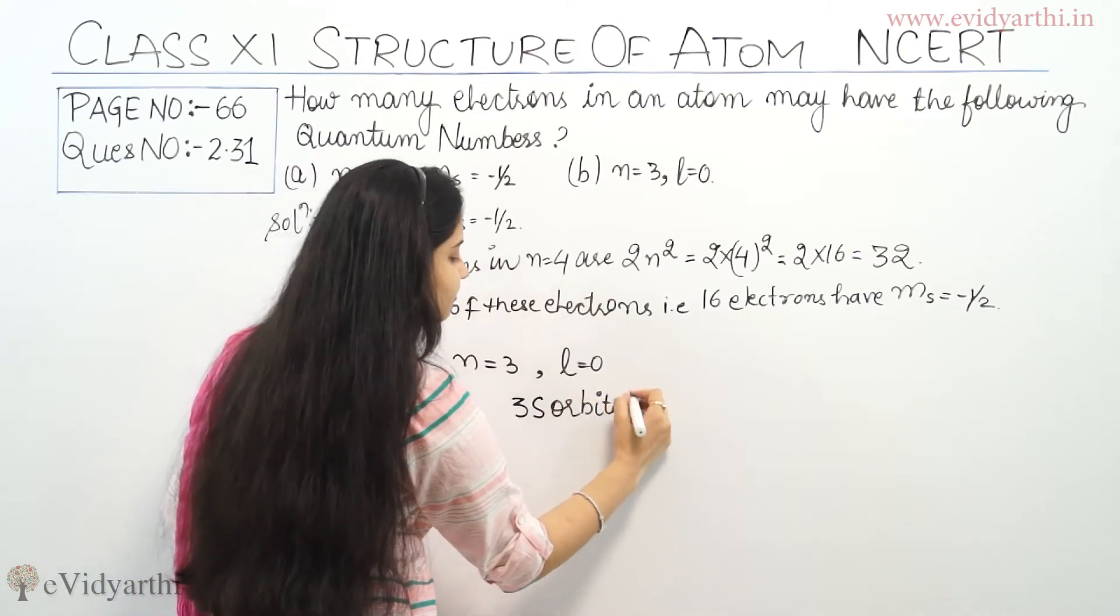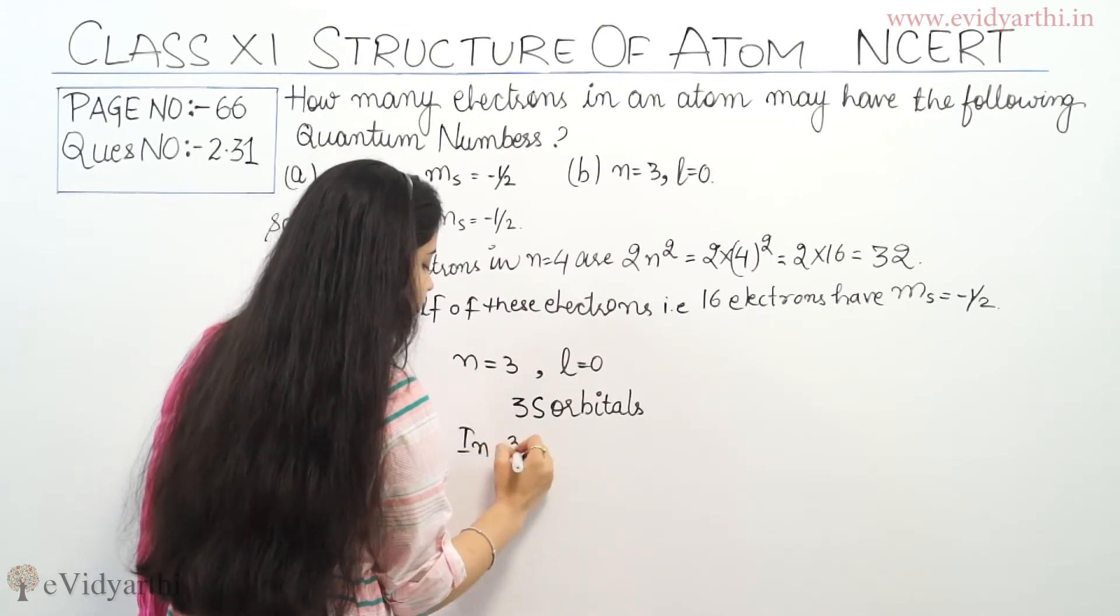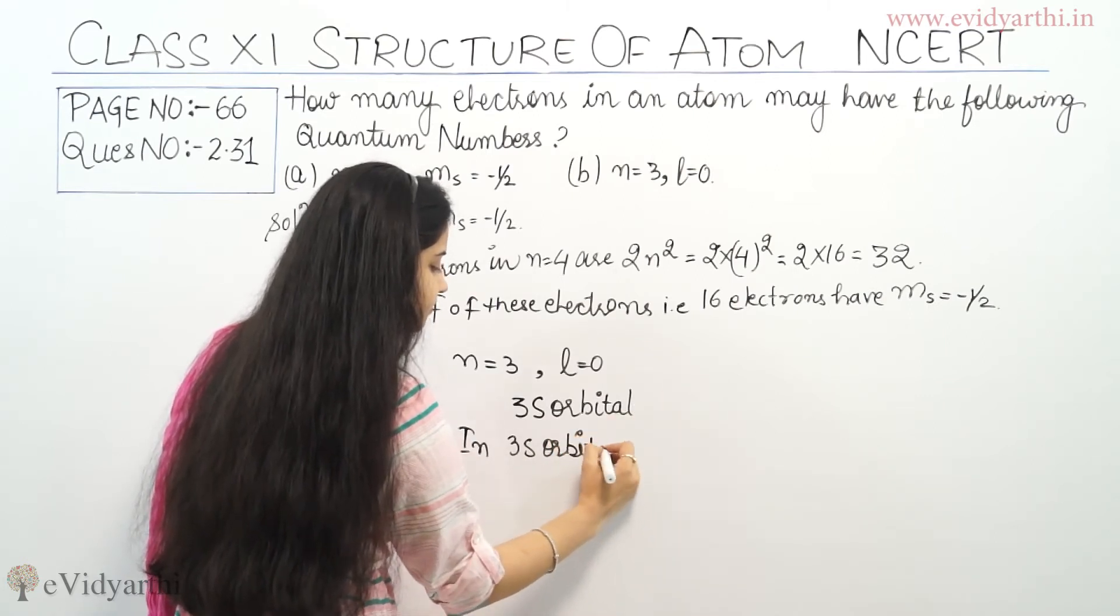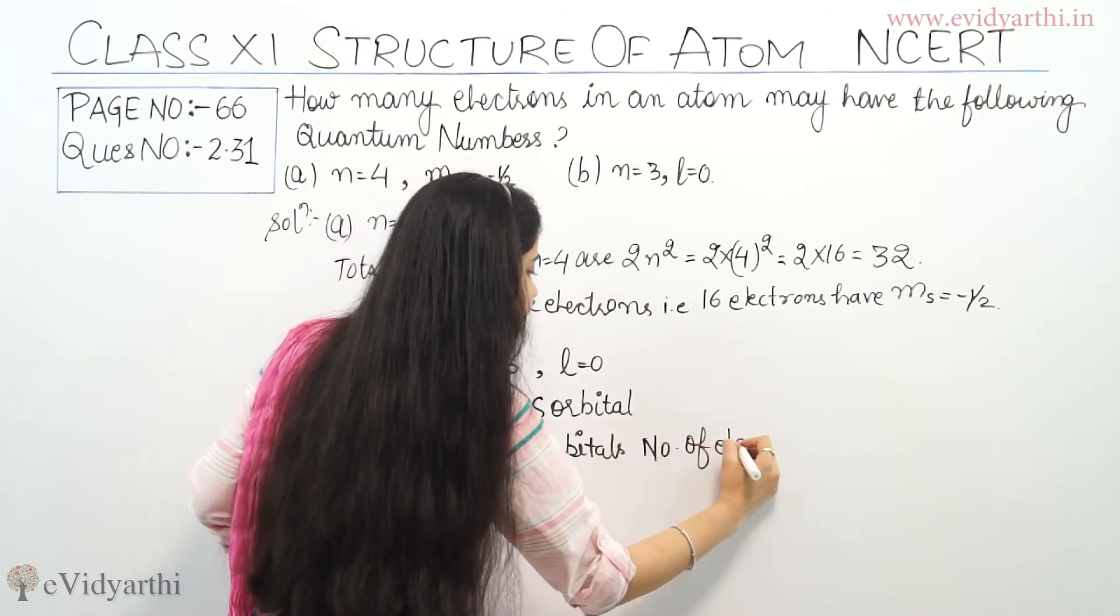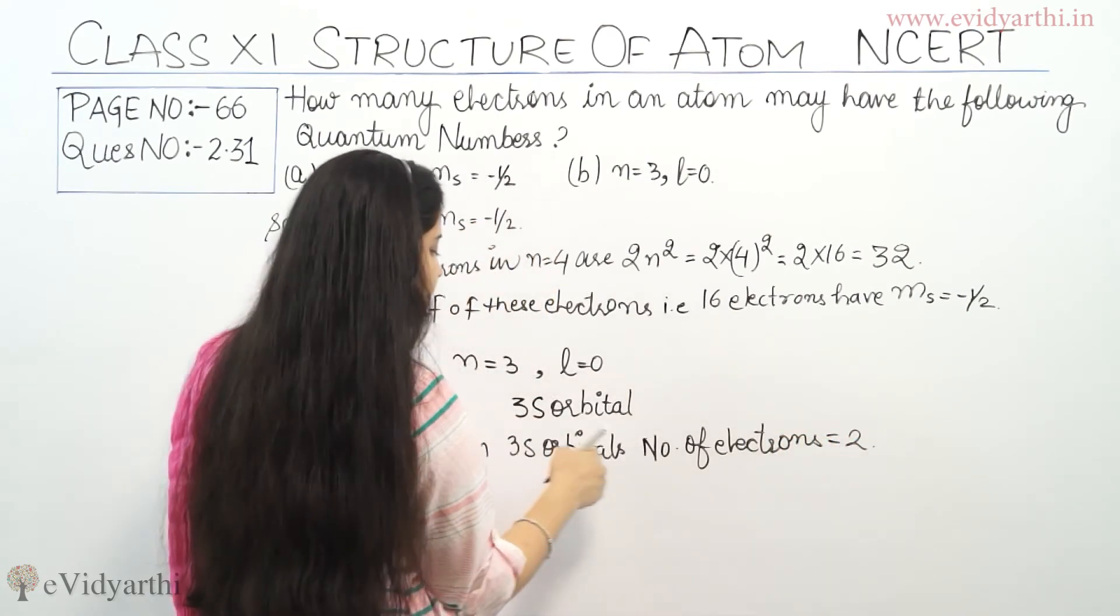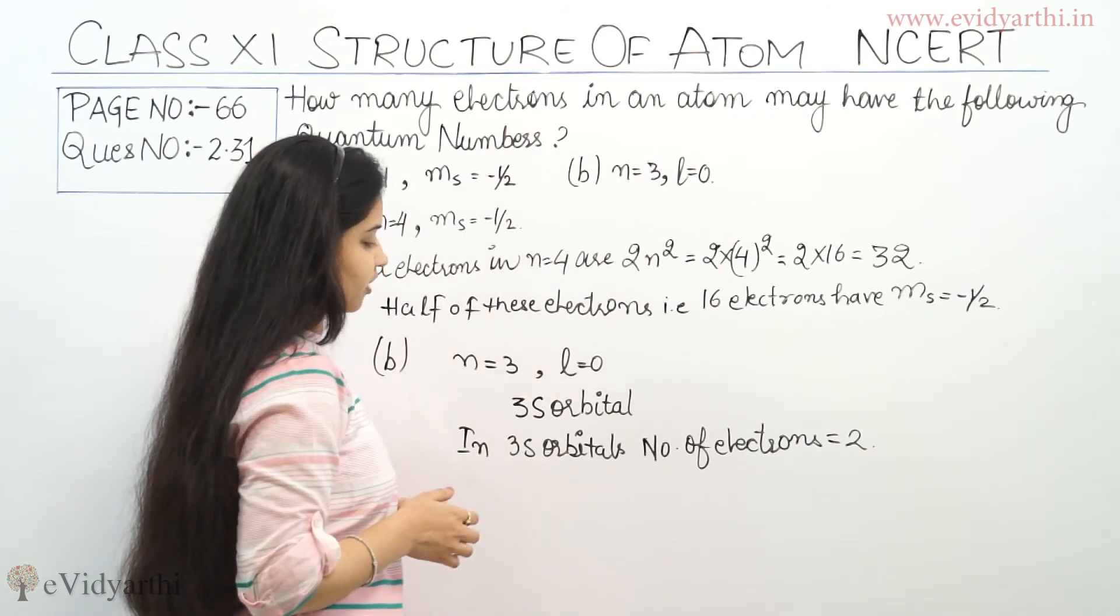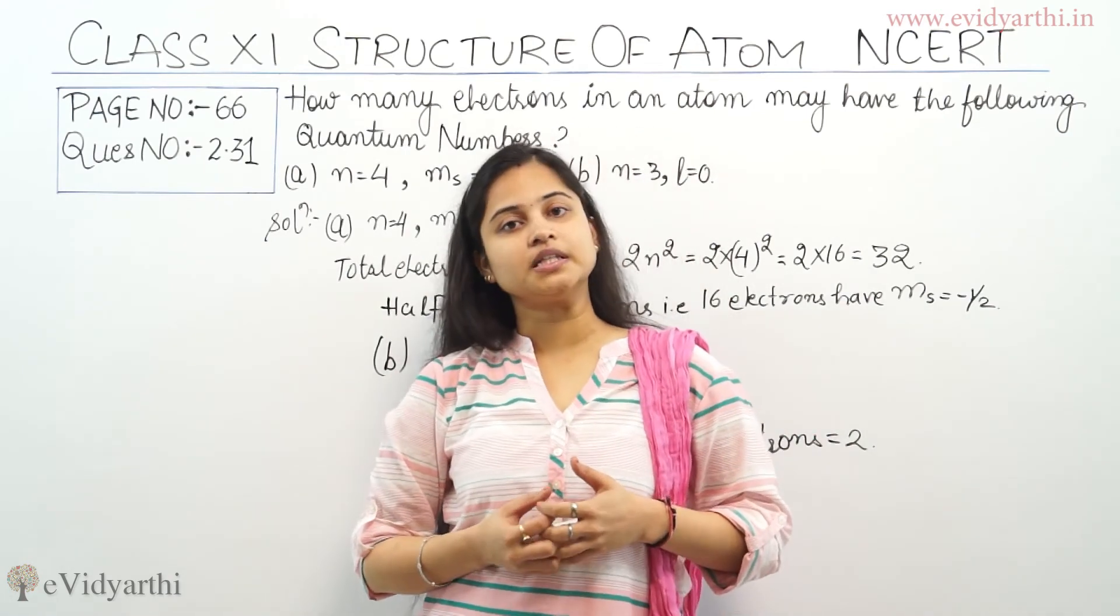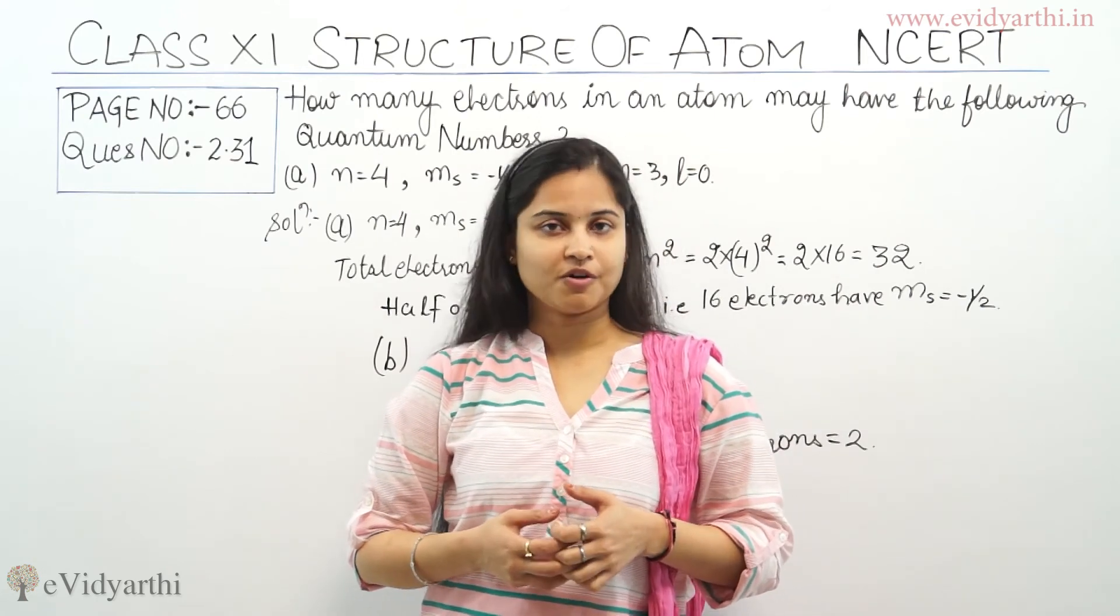In 3s orbital, number of electrons is equals to 2. Because in s orbital, there will be 2 electrons, one with the positive half spin and one with the negative half spin. So there will be 2 electrons in 3s orbital. This is the counting of electrons in the given set of quantum numbers.